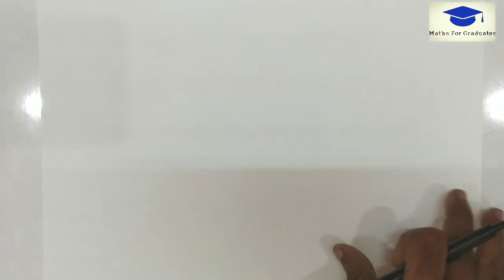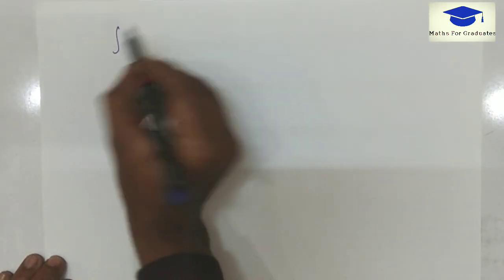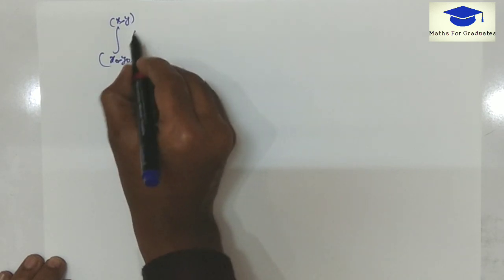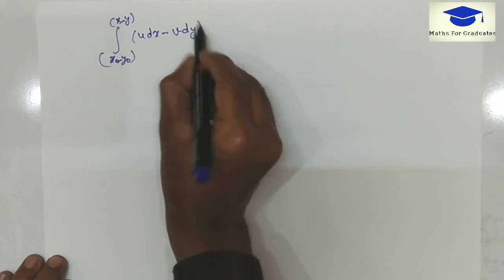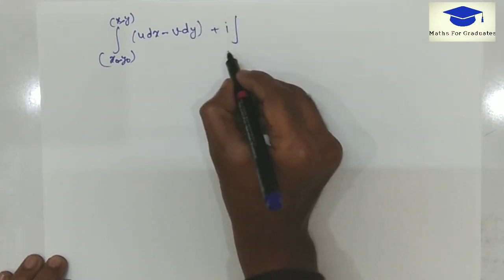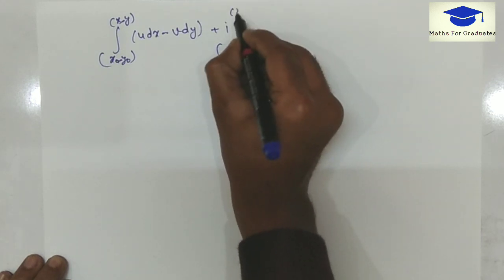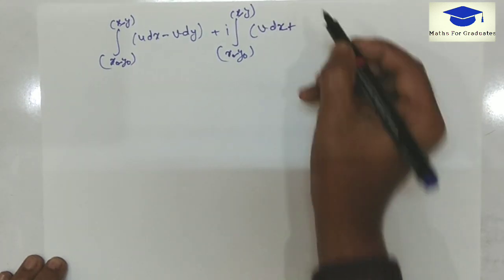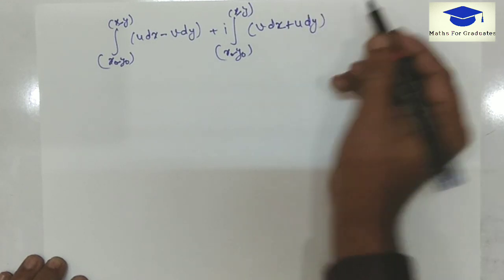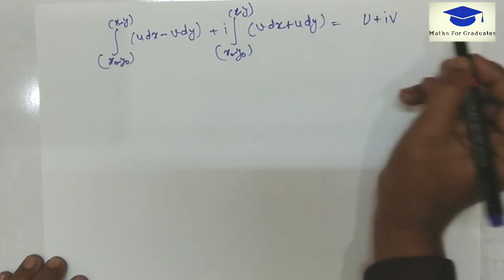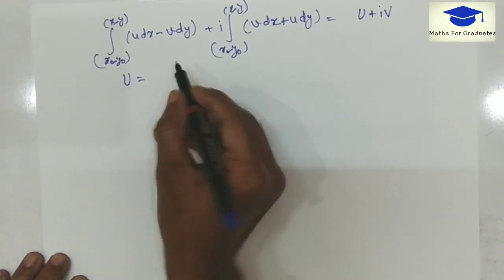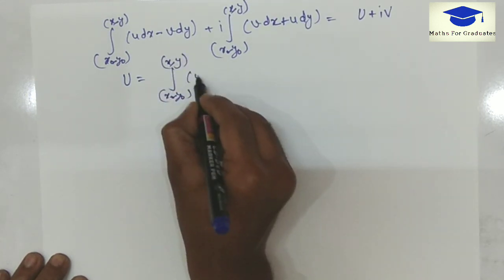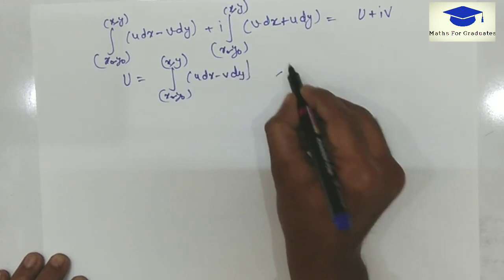Now separating real and imaginary terms, capital U is here, and capital V is here.